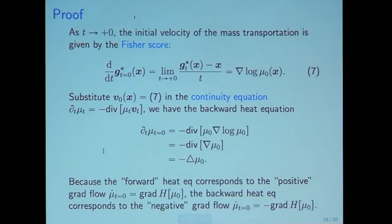The proof is like this. First, take limit T tends to zero. Then the initial velocity of the mass transportation is given by the Fisher score. This is a corollary of theorem one. This is limited to the Gaussian case.